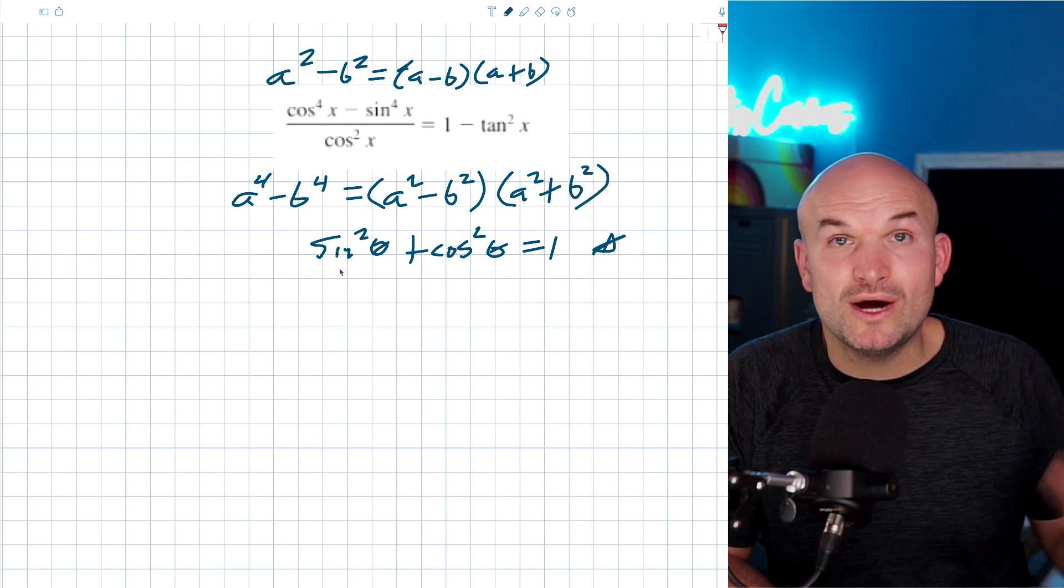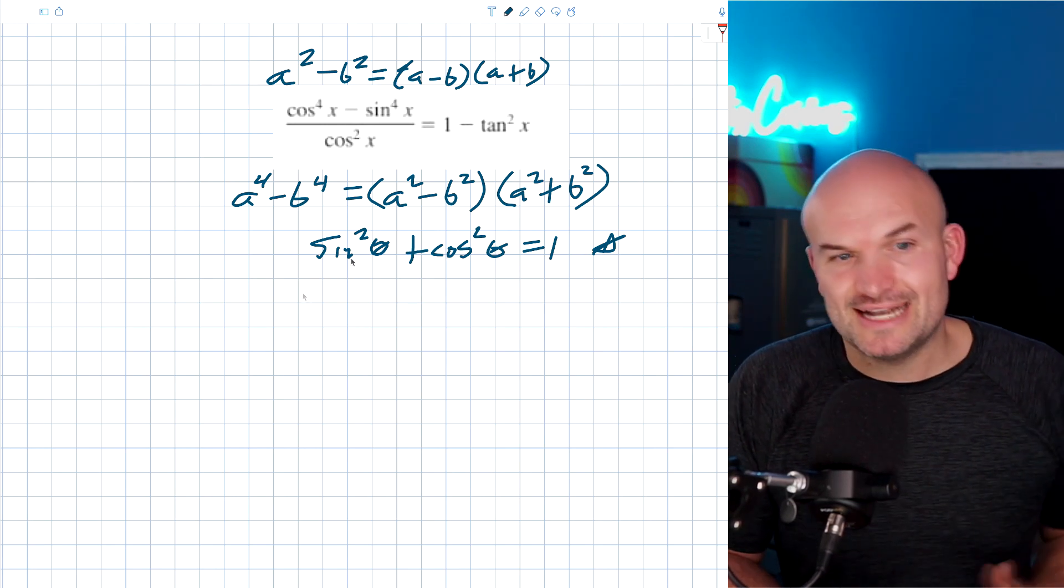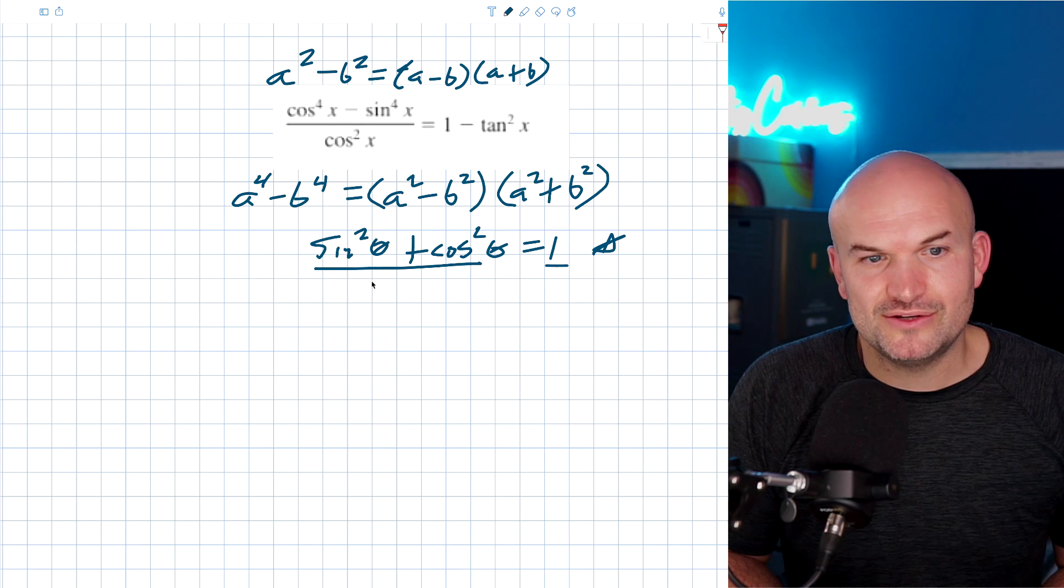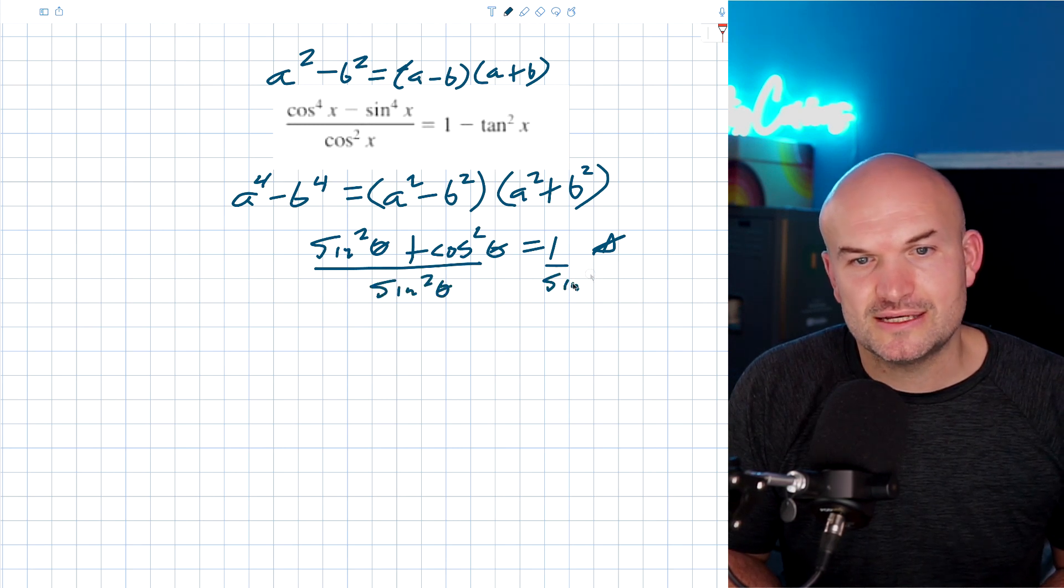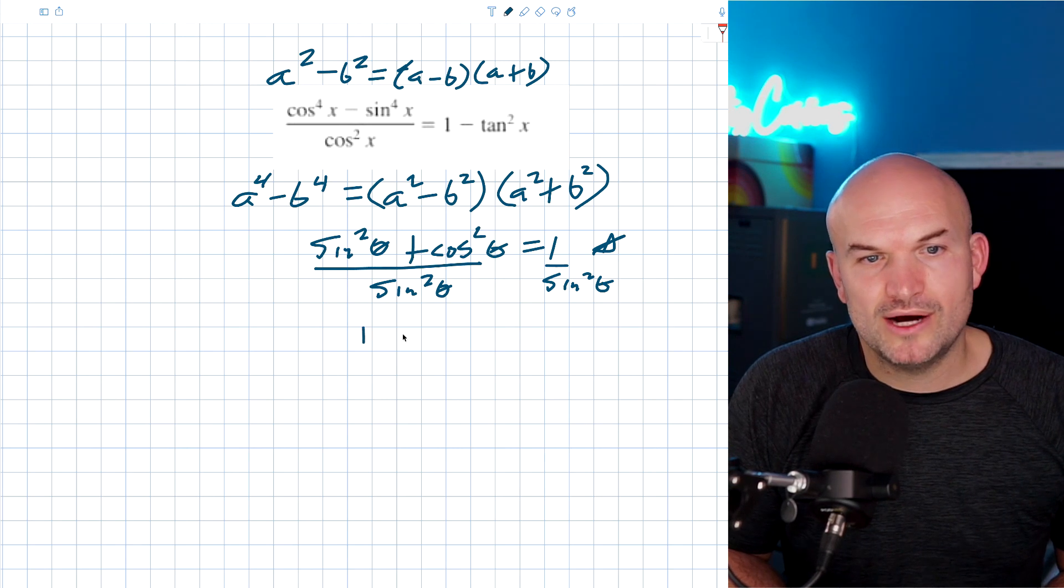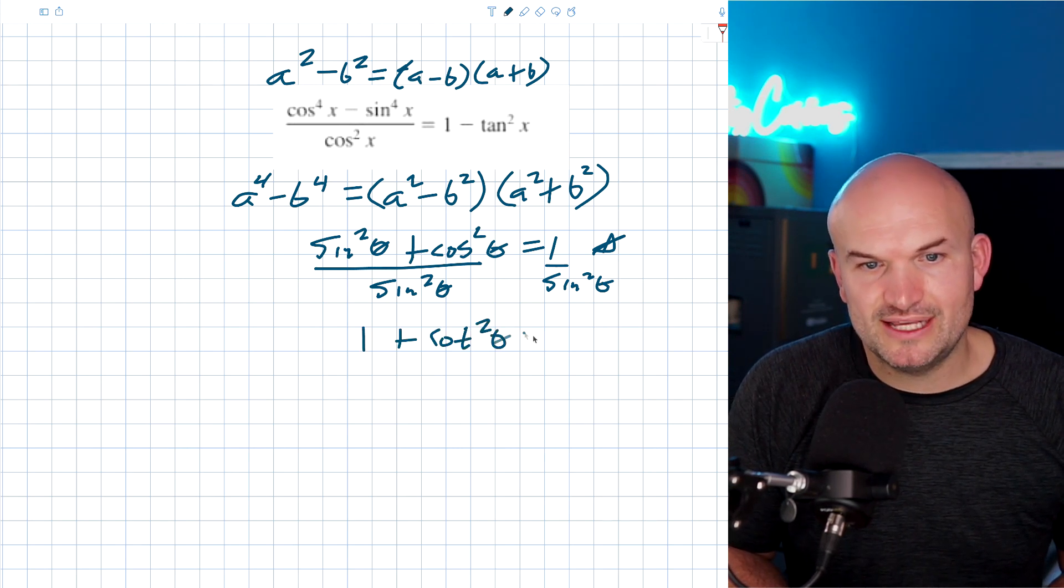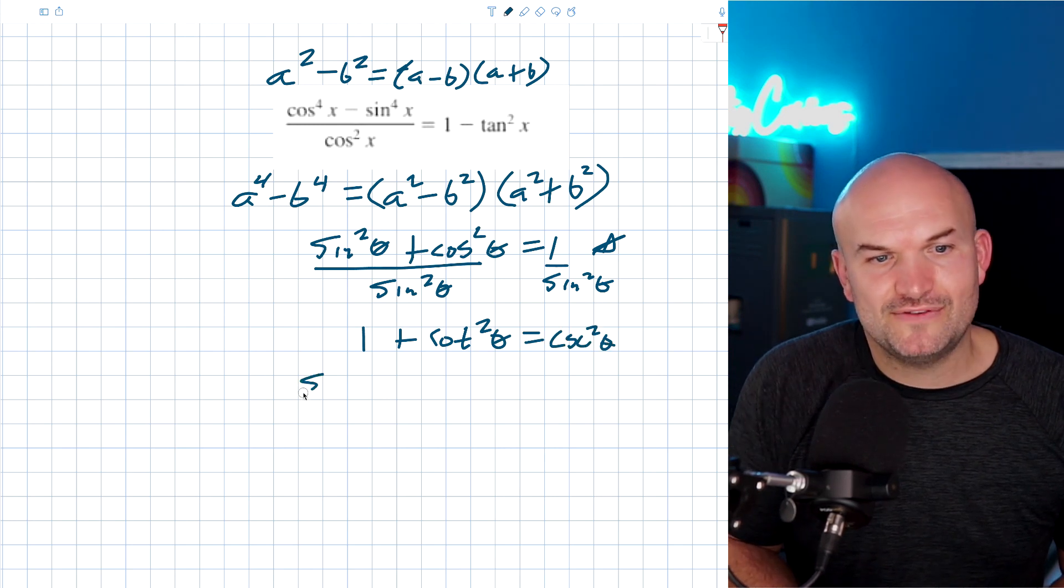But anyways, if you want to be able to figure out what the other identities are, just go ahead and divide by certain numbers, right? Or certain functions, like if you divided by a sine squared of theta on both sides, right, you would have a one plus a cotangent squared of theta equals a cosecant squared of theta.